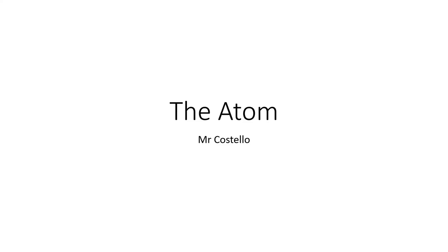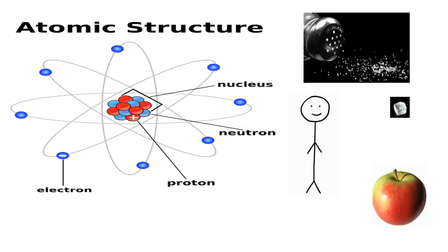In today's lesson, we will discuss the atom and the history of the discovery of the atom. When you think about the atom, a model such as the one we see here may come to mind. You have what's called the nucleus. The nucleus is made up of protons and neutrons. Protons are represented here in red, and they carry a positive charge.